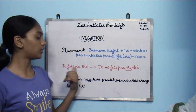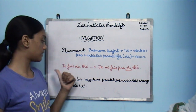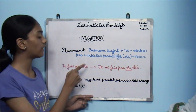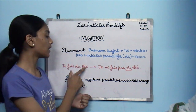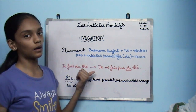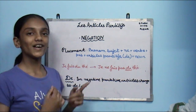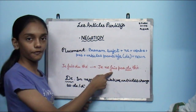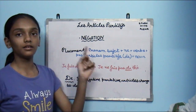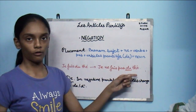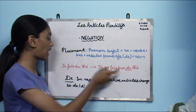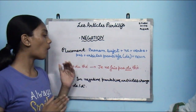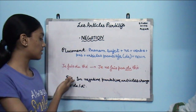Here's an example. Je fais du thé means I am making tea. Je is the pronom sujet, fais is the verb, du is the article partitif, and thé is the noun. Thé means tea and it is masculine — it's an exception. So when changing it to negative, we write: je — ne — fais — pas — then the article partitif — de — then the noun thé. Now I'll tell you why we use de and not du: in article partitif, whenever we do the negation, the article always changes to de.